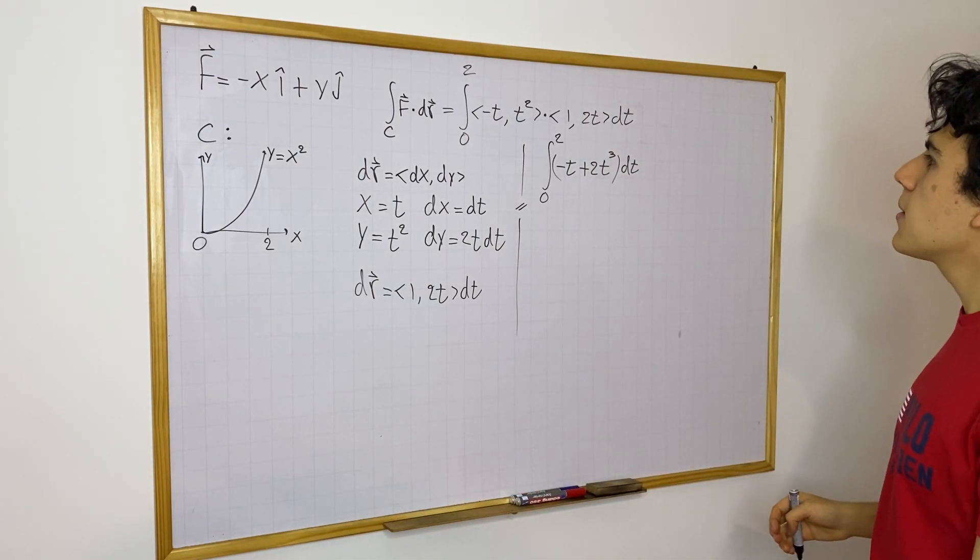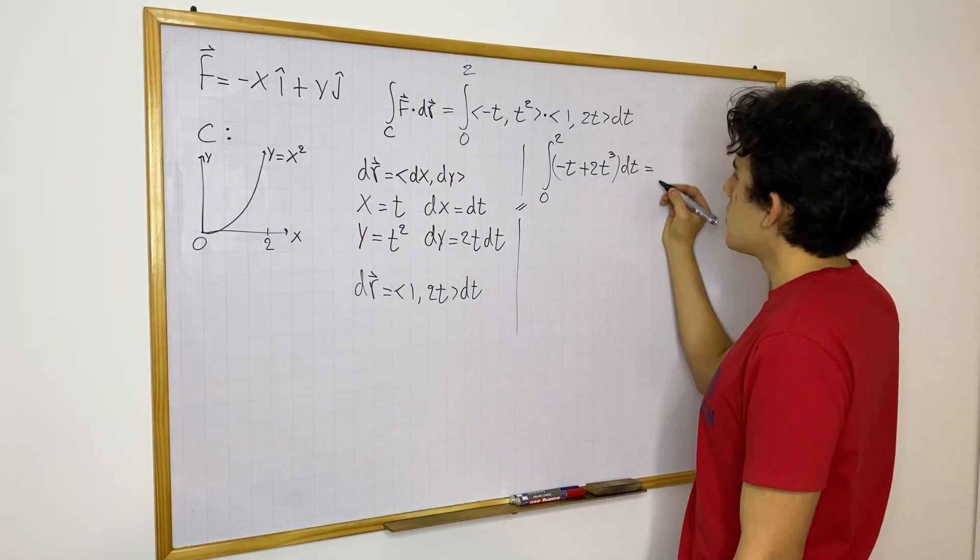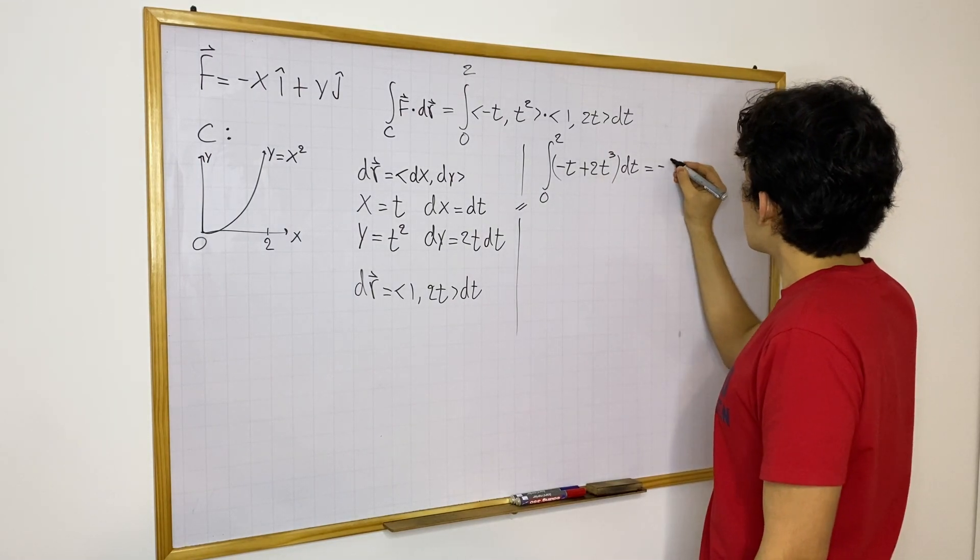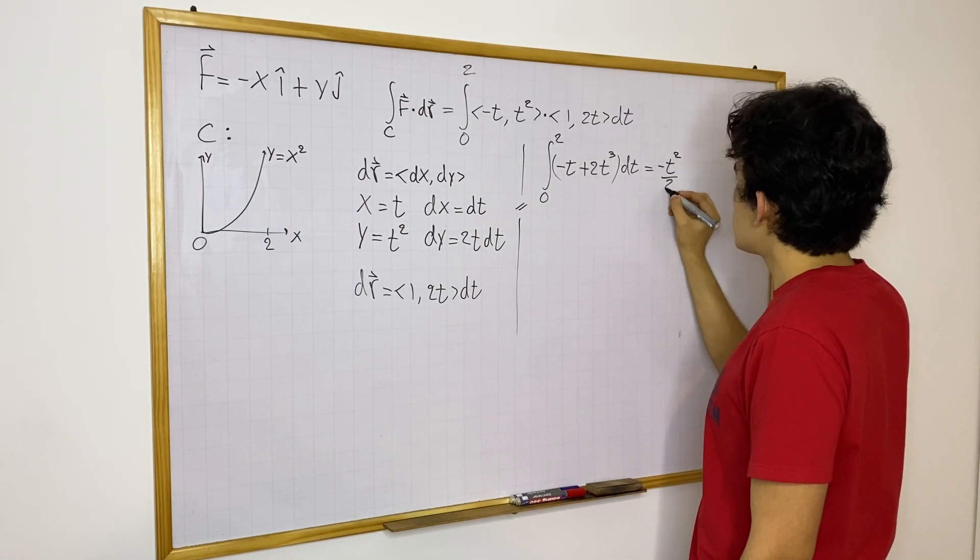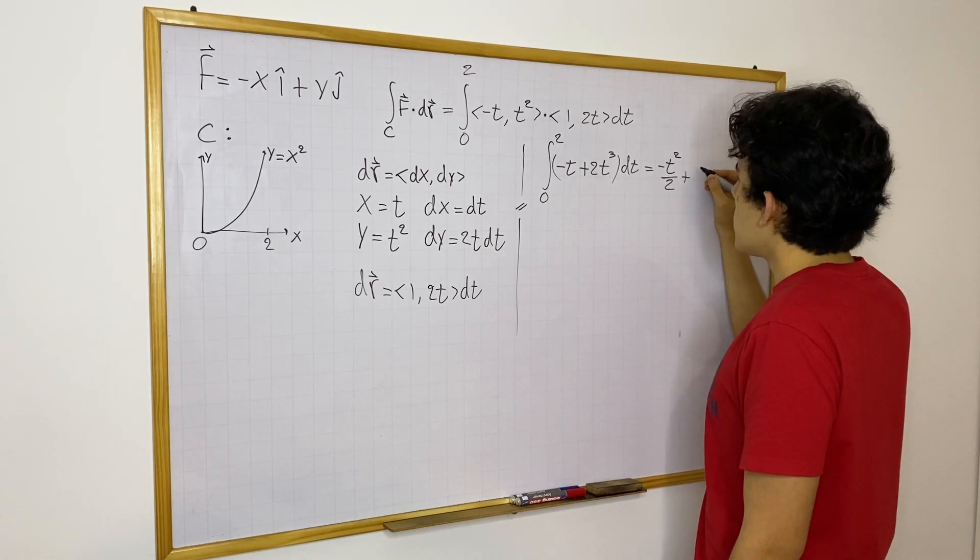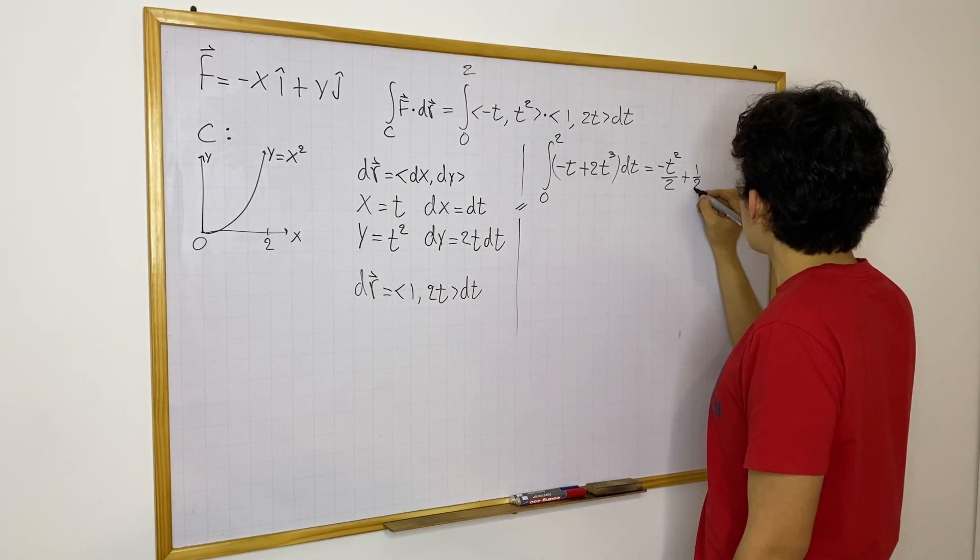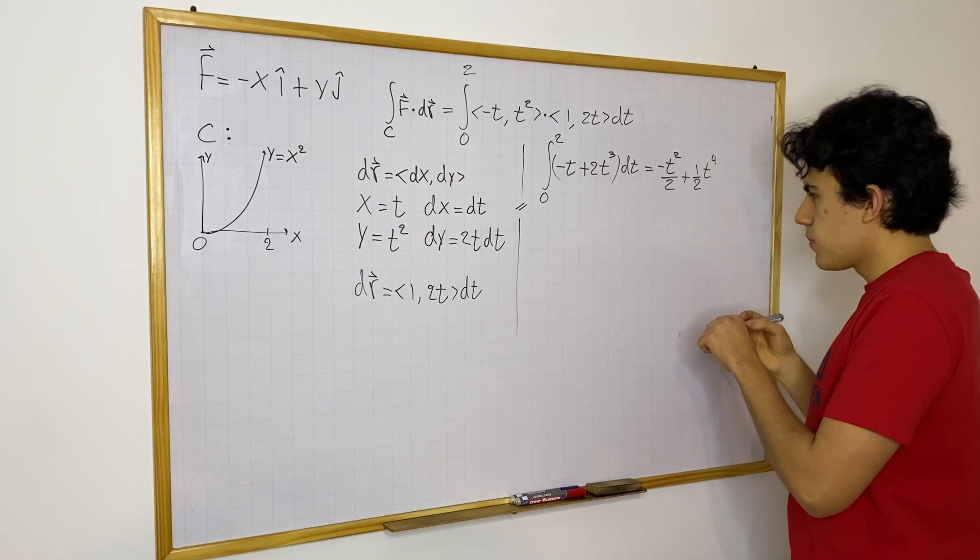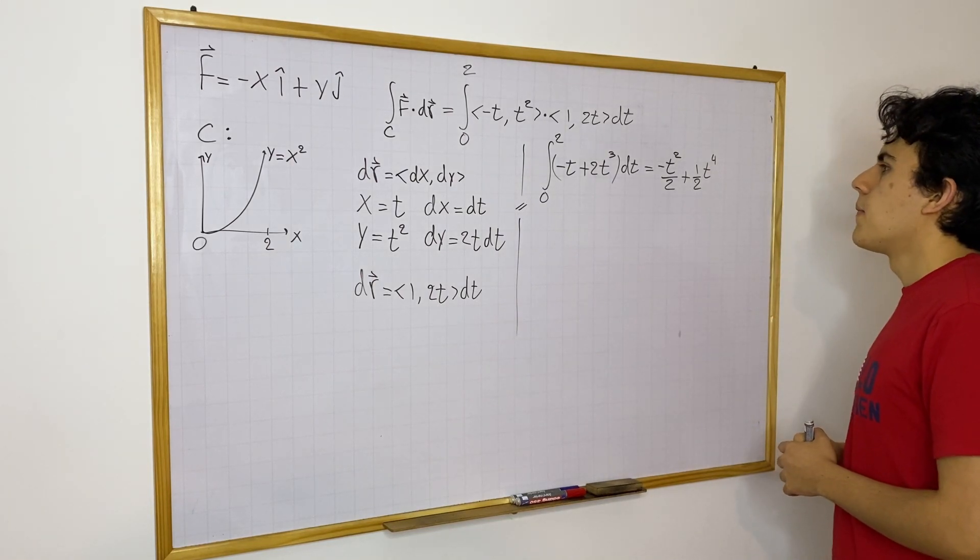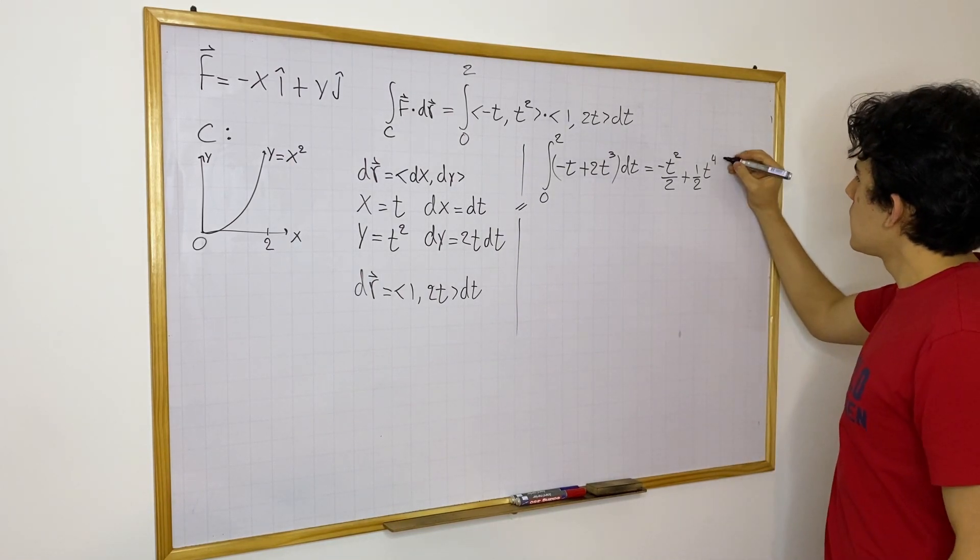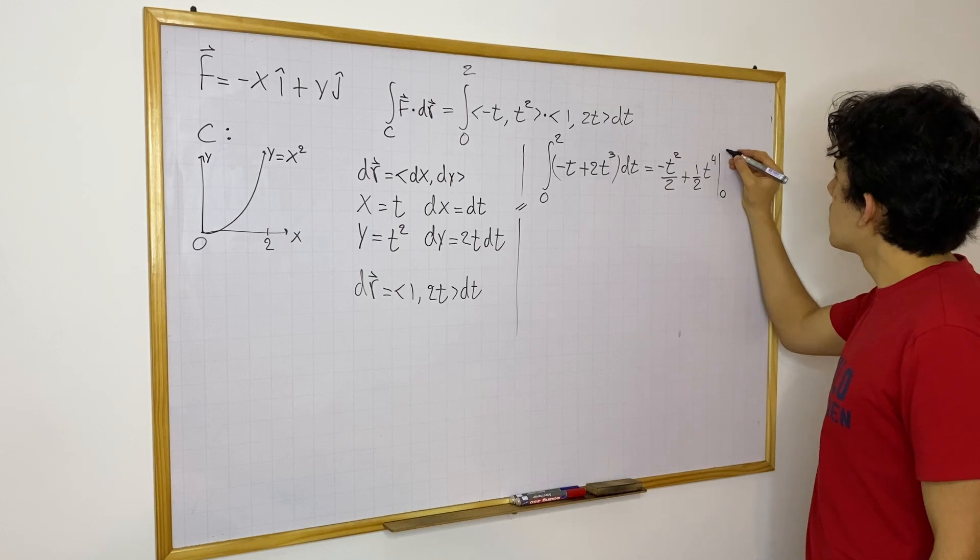And nice, we just integrate this. So let's do that. That should be easy. We have minus t squared divided by 2 plus that should be a half t to the fourth power. Great. And we evaluate this from 0 to 2.